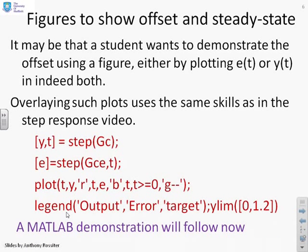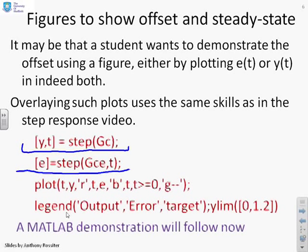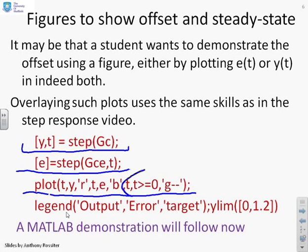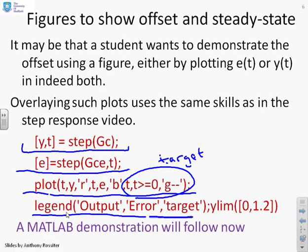Here's what we can do. We can calculate the output response using [y, T] = step(GC). We can calculate the error at the corresponding times by doing E = step(GCE, T). We can use this plot command to overlay the output, the error. This funny bit at the end does the target—it plots a signal which has got a value of 1. I've used a legend to make sure I can see which signal is which. This final bit sets the y-axis limits to 0 to 1.2.